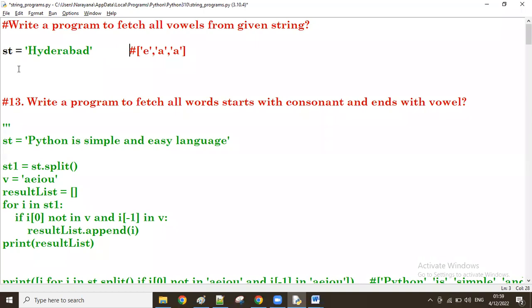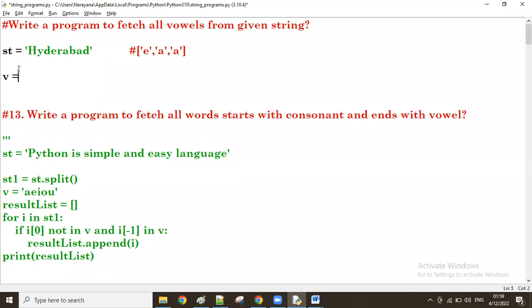So for that, what we do? I'll take the object of vowels - A, E, I, O, U. Now from the string I'll fetch one by one and check whether it's available or not available. If available here, then I'll take it as an element of the list, the result.